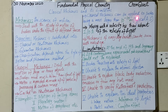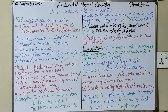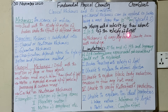The smallest object on which classical mechanics can be applied must have a size larger than 10 raise to power minus 10 meters, which is the typical atomic size. If any object's size is less than 10 raise to power minus 10 meters, classical mechanics cannot be applied to it at all.